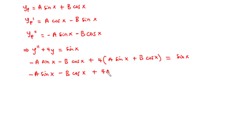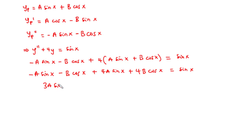We have [-a·sin(x) - b·cos(x)] + 4[a·sin(x) + b·cos(x)] = sin(x). Expanding and simplifying: -a·sin(x) - b·cos(x) + 4a·sin(x) + 4b·cos(x) = sin(x), which gives 3a·sin(x) + 3b·cos(x) = sin(x).